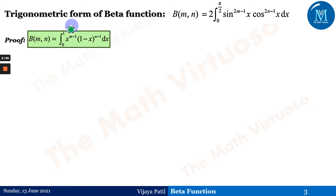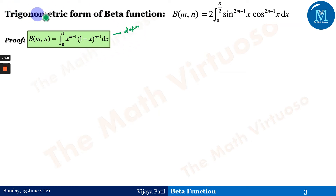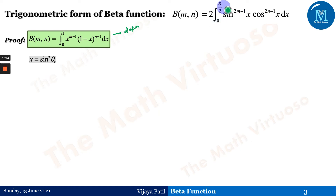Now for the proof of the trigonometric form: beta(m, n) = integral from 0 to 1 of x^(m-1)(1-x)^(n-1) dx, as per the definition. We'll prove this trigonometric form using the definition of the beta function. Observing the definition, the limits are 0 to 1, whereas we need 0 to π/2 and we need to bring sin and cos into the picture through substitution.